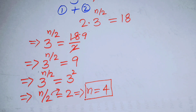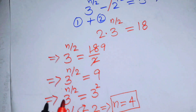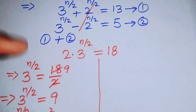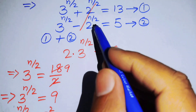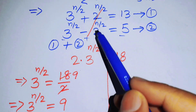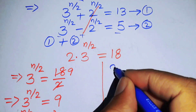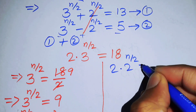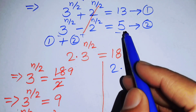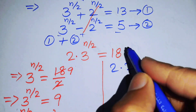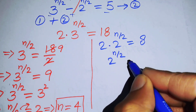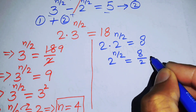When we subtract equation 2 from equation 1, the 3^(n/2) terms cancel. We change signs accordingly and add the two terms: 2 times 2 to the power of n over 2 equals 13 minus 5, which equals 8. Moving 2 to the right: 2^(n/2) equals 8 over 2, which equals 4.